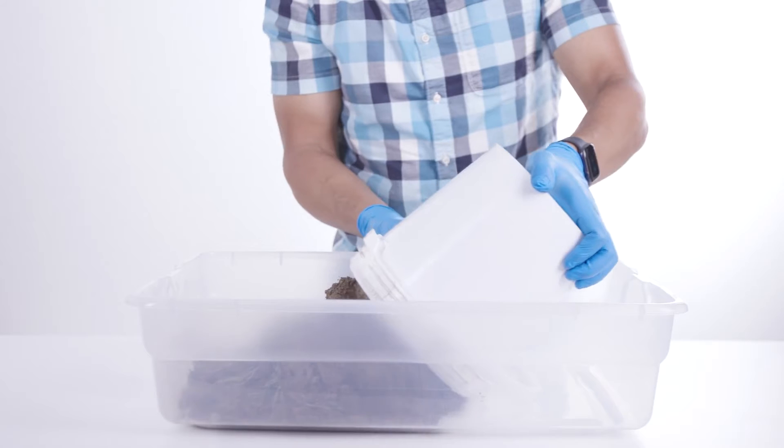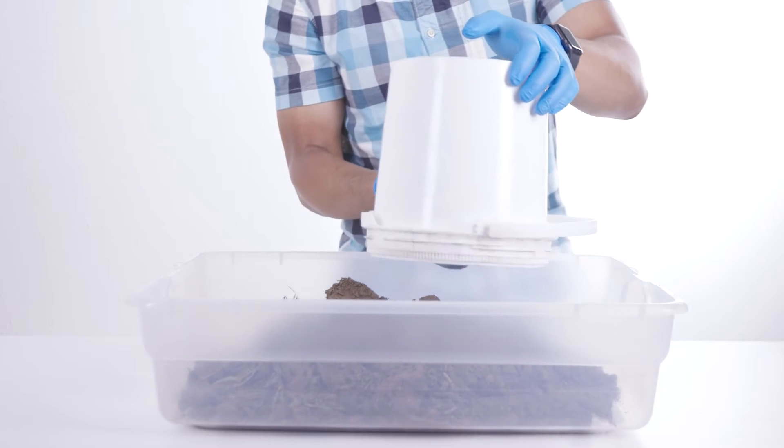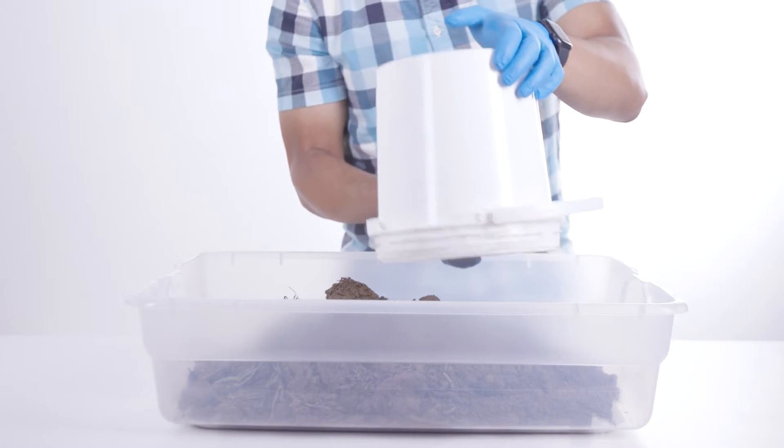To prepare the bulk soil sample, air dry the soil. Air drying is quickest if the soil is spread in a thin layer and air is moved over the soil.